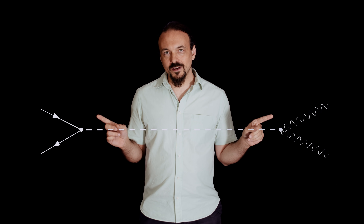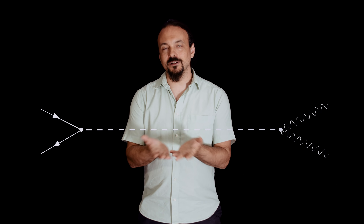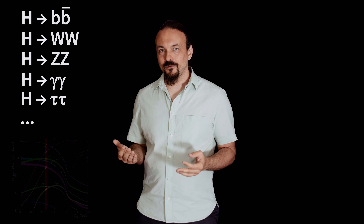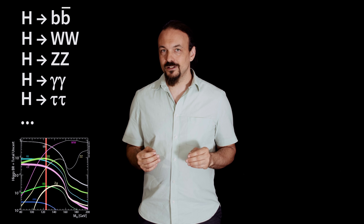The real test of whether this new particle is the Higgs boson is checking how strongly it interacts with other particles, because for the Higgs boson there's a very specific pattern: the Higgs interaction strength depends on mass — the higher the mass, the stronger the interaction. So how do we test this experimentally? We look at the life of the Higgs boson: it's produced from some particles, and then it decays into some particles. The probabilities of these processes are influenced by the interaction strength. We can look at the probabilities of different Higgs decays, measure them, compare them with predictions from theory, and check if everything agrees. So far, within the precision that we have and for the decays that we are able to measure, everything agrees very well.